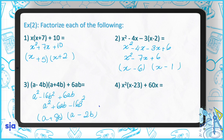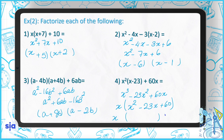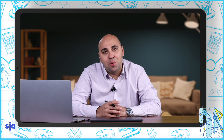Question 4: expand first, giving x cubed minus 23x squared plus 60x. We take x as the highest common factor, so each term is divided by x. Keep x outside the bracket, then factorize the remaining expression as x and x, minus and minus. We need two numbers whose product is 20 times 3 and whose sum is 26.